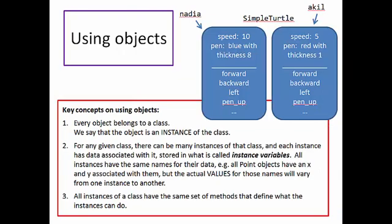To repeat, here are the three key concepts. First, every object belongs to a class — we say that the object is an instance of the class. Second, for any given class there can be many instances of that class, and each instance has data associated with it stored in what's called its instance variables. All instances have the same names for their data, for example all points have an x and y, but the actual values will vary from one instance to another. Third, all instances of a class have the same set of methods that define what the instances can do.